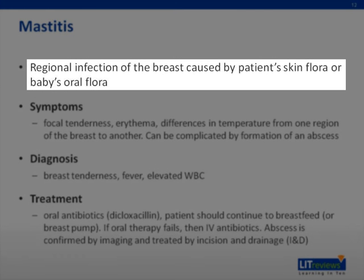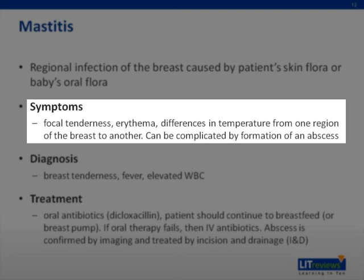Mastitis is a regional infection of the breast, which is caused by the mother's skin flora or baby's oral flora. These bacteria can penetrate through cracked nipples and proliferate, causing symptoms of infection. Commonly, lactating women will have warm, diffusely tender, and firm breasts, especially at the time of breast engorgement and milk letdown — these are normal signs and are not signs of mastitis. The infection typically presents with focal tenderness, erythema, and differences in temperature from one region of the breast to another.